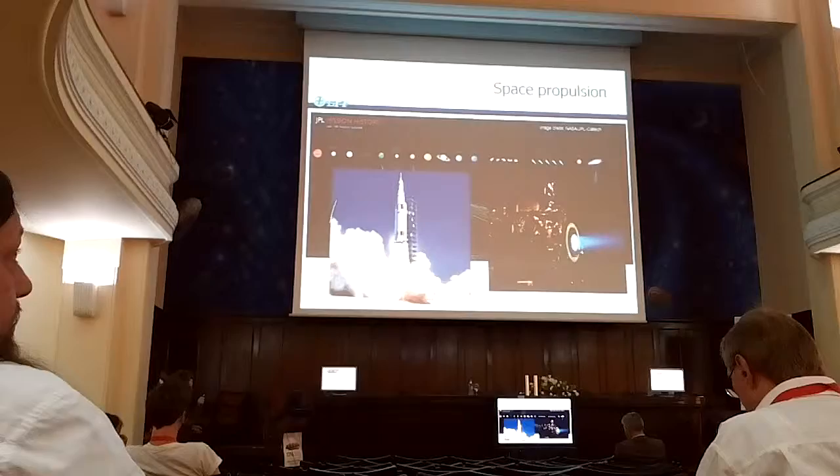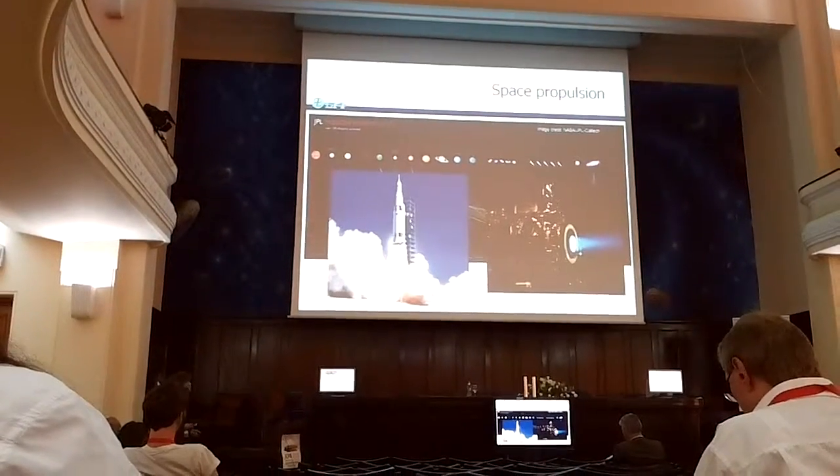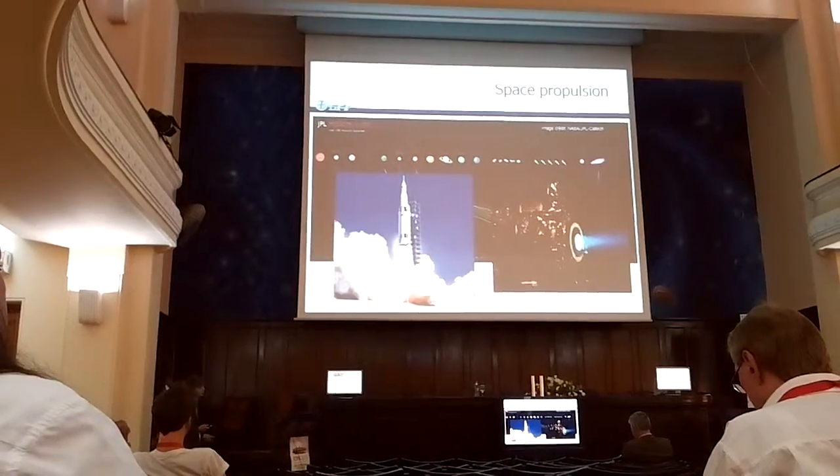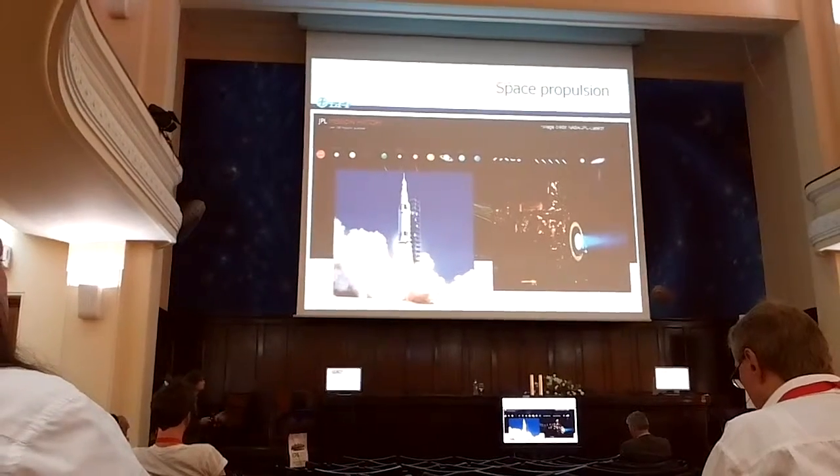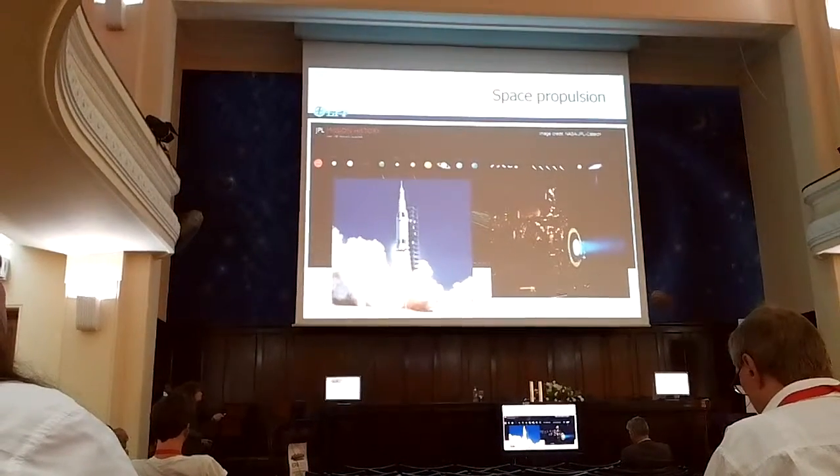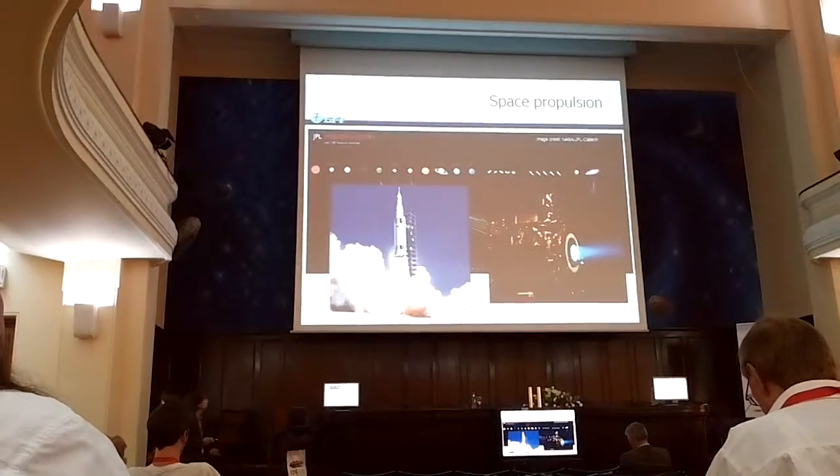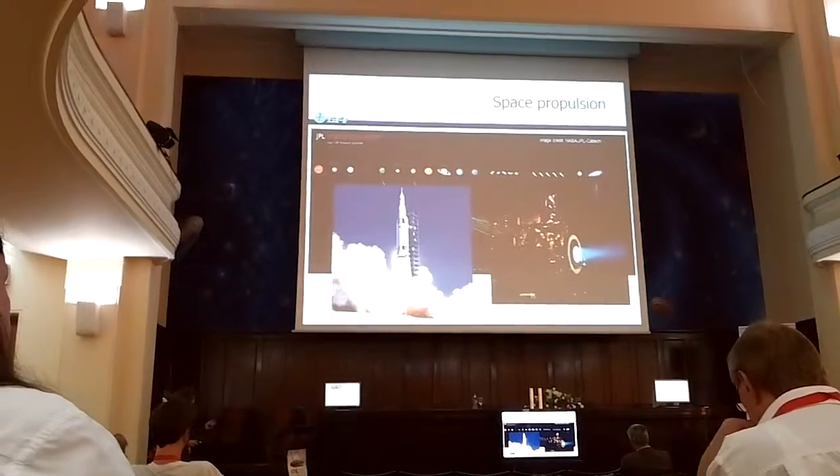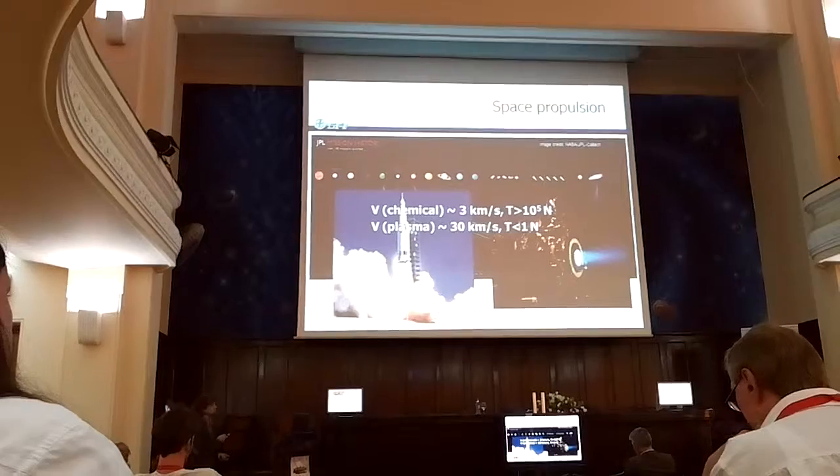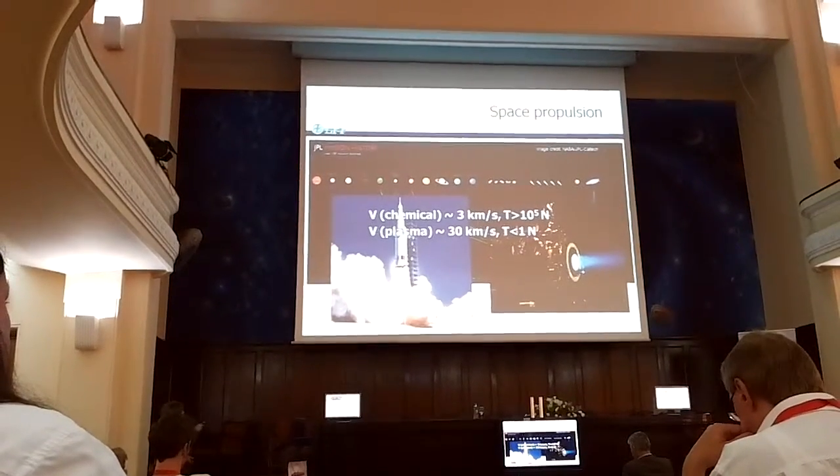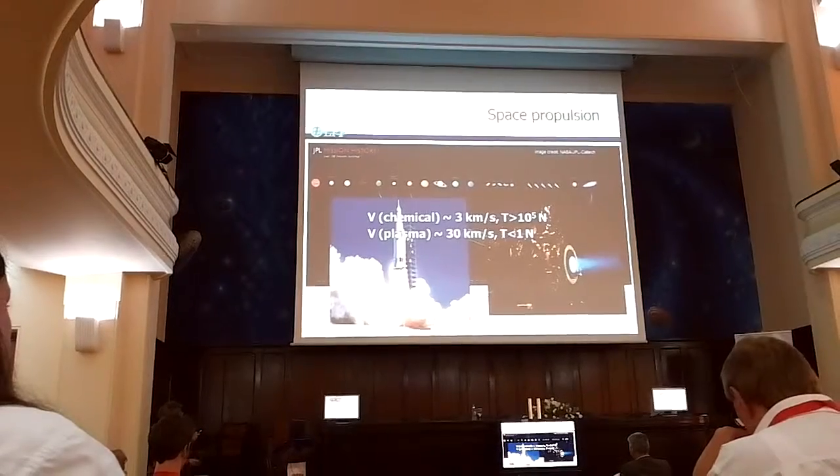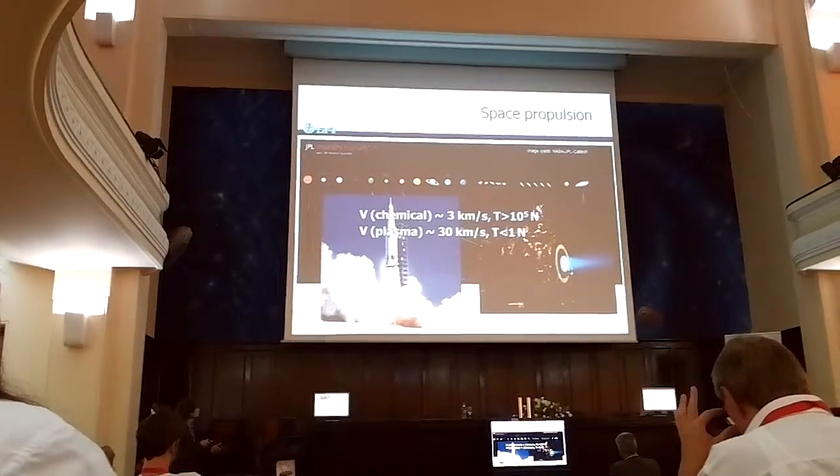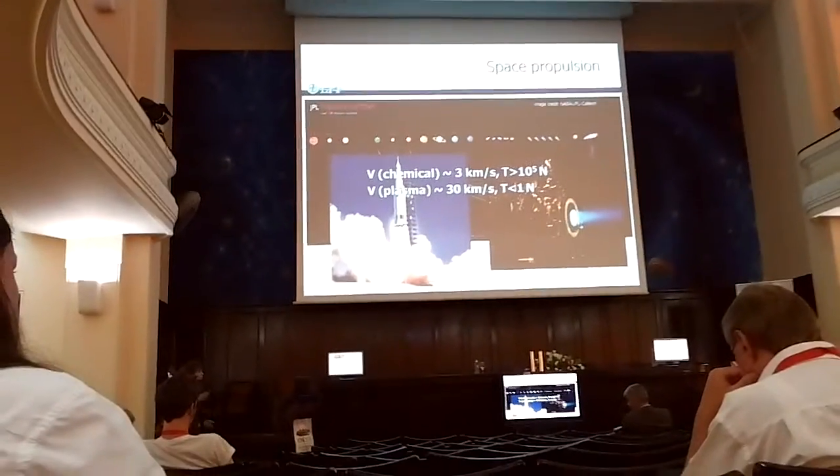So the main propulsion system is a chemical rocket or chemical propulsion system. And also there is another very important propulsion system when you are already in space, how to move your spacecraft. It's propulsion based on plasma discharge. Here you can see image of spacecraft with ion thruster. These propulsion systems, they are very different actually. For example, the chemical propulsion provides fuel expelled with velocity 3 km per second and a huge thrust. That's why you can start from Earth with this propulsion system and go to space.